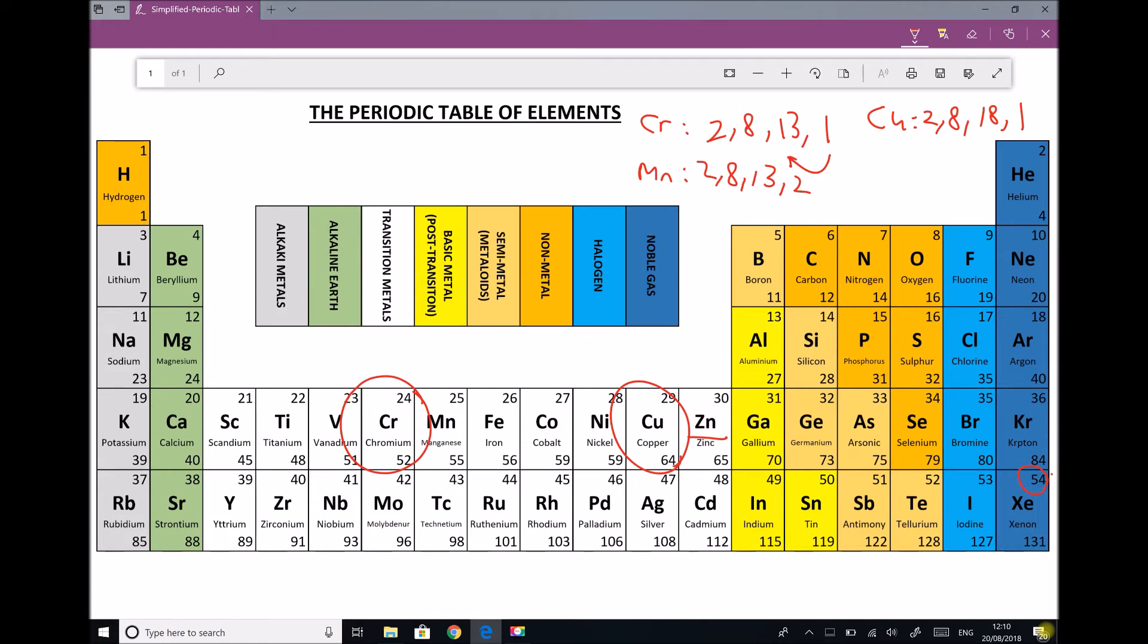So whilst this may seem a little bit complicated, what we have is a rule for the transition metals, whereby we have two electrons in the outer shell, or the fourth shell, and we backfill the third shell with each additional electron, with the exception of two elements, chromium and copper, which both actually only have one electron in the outer shell, and one of those electrons also drops into the third shell.